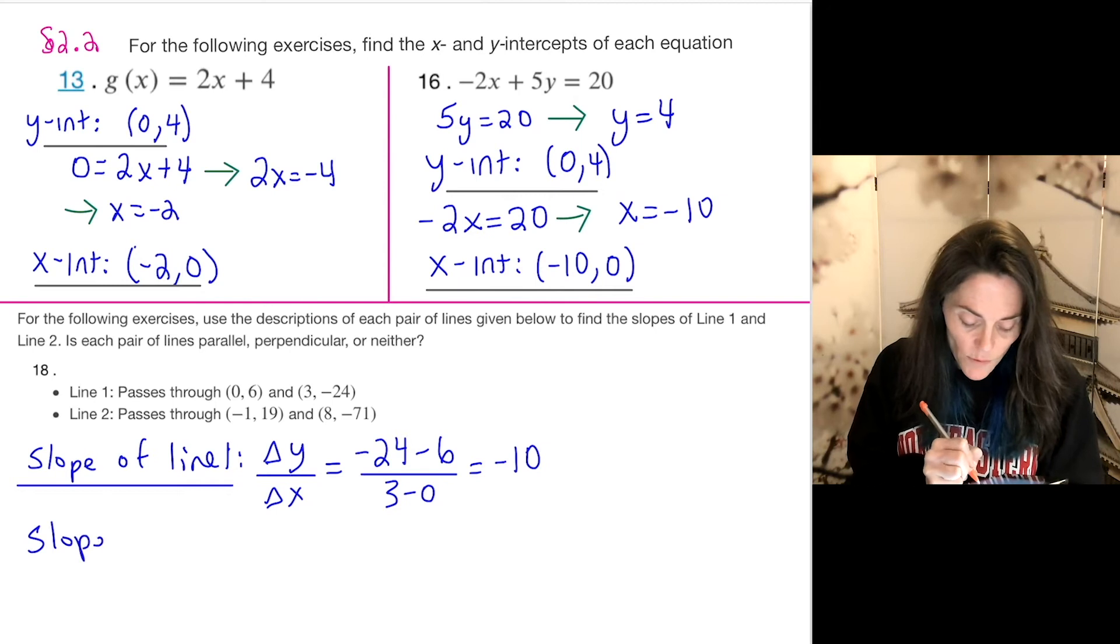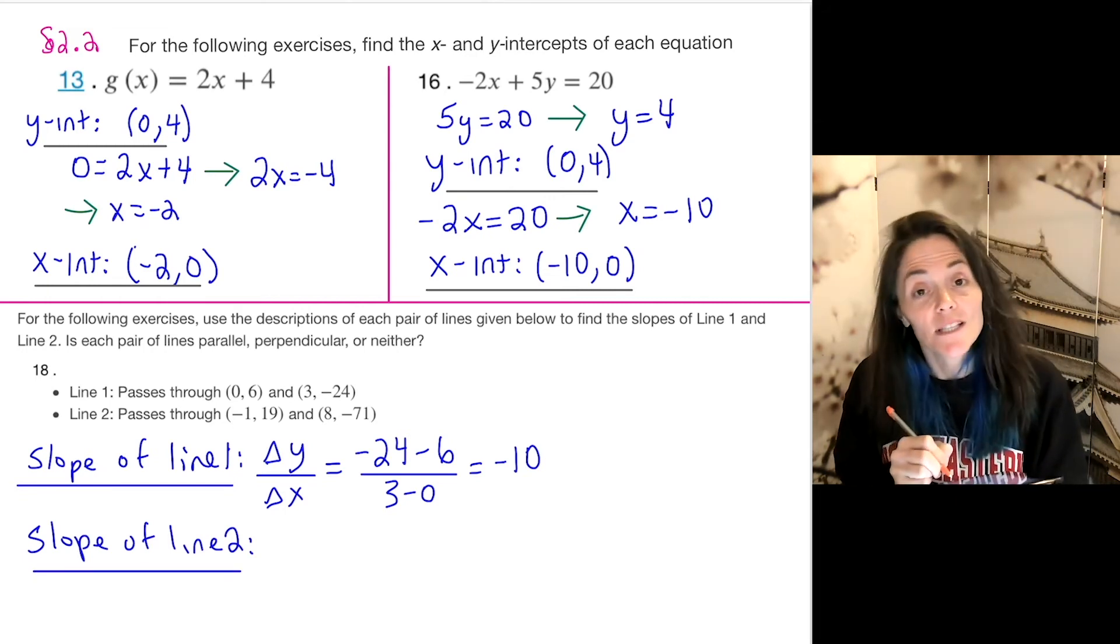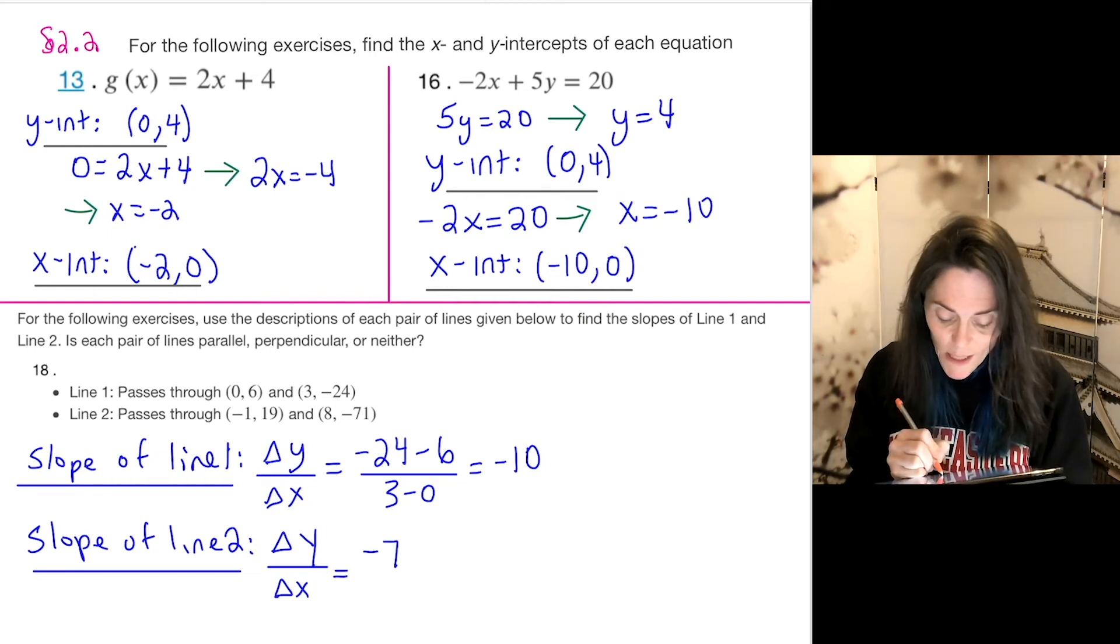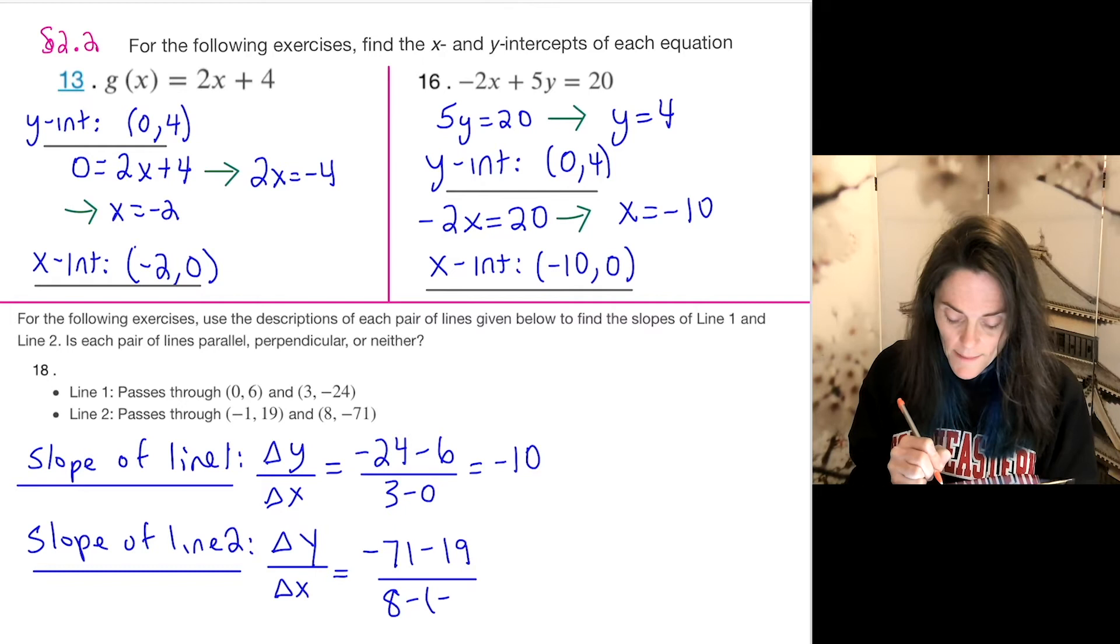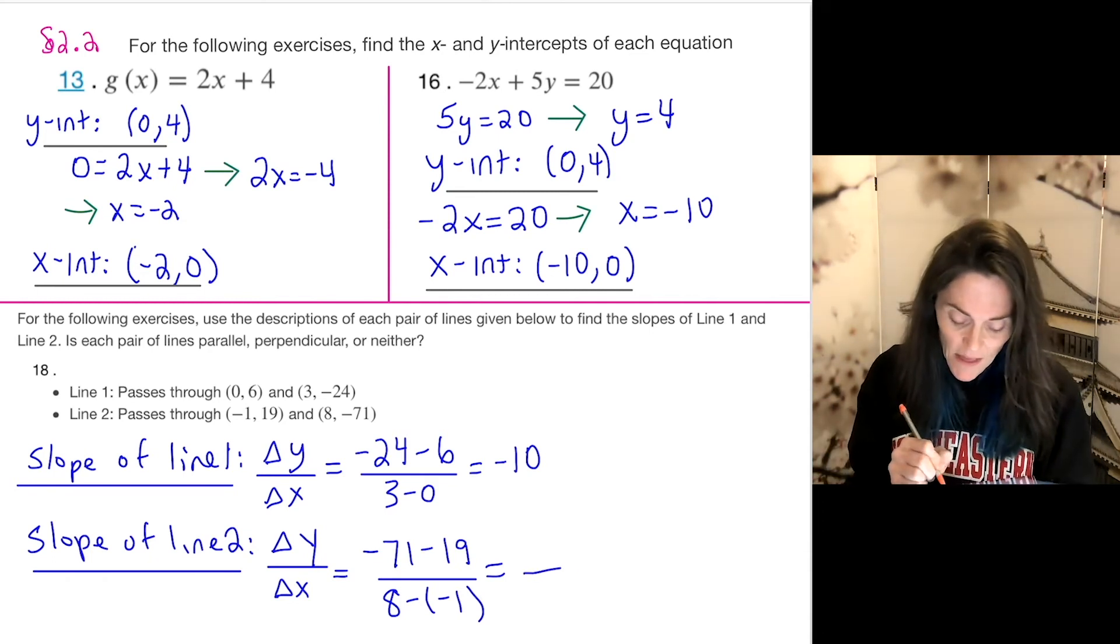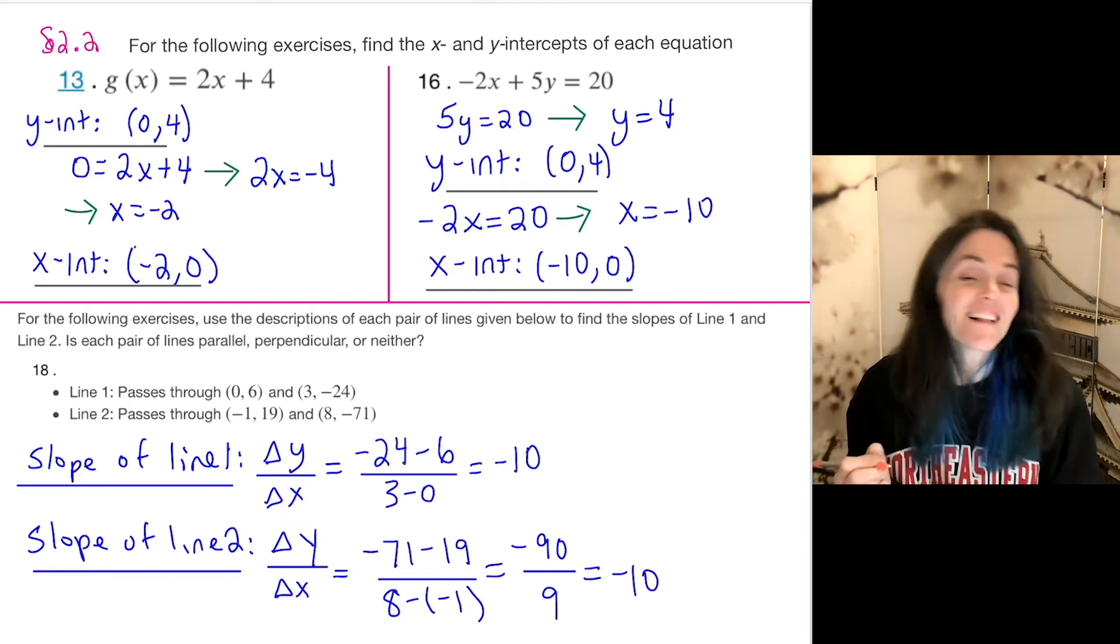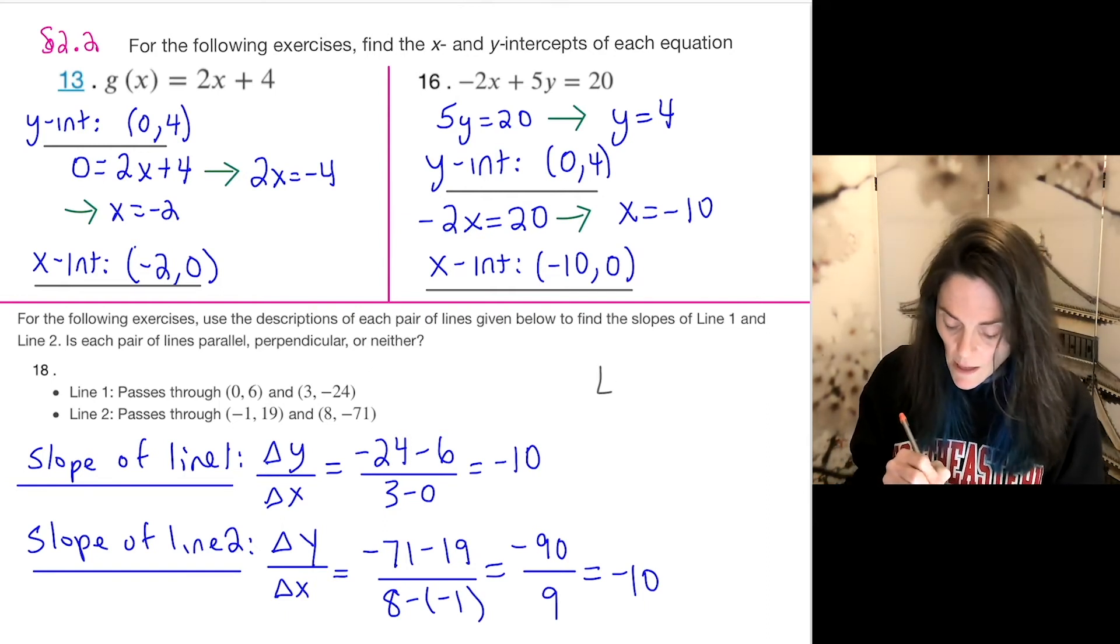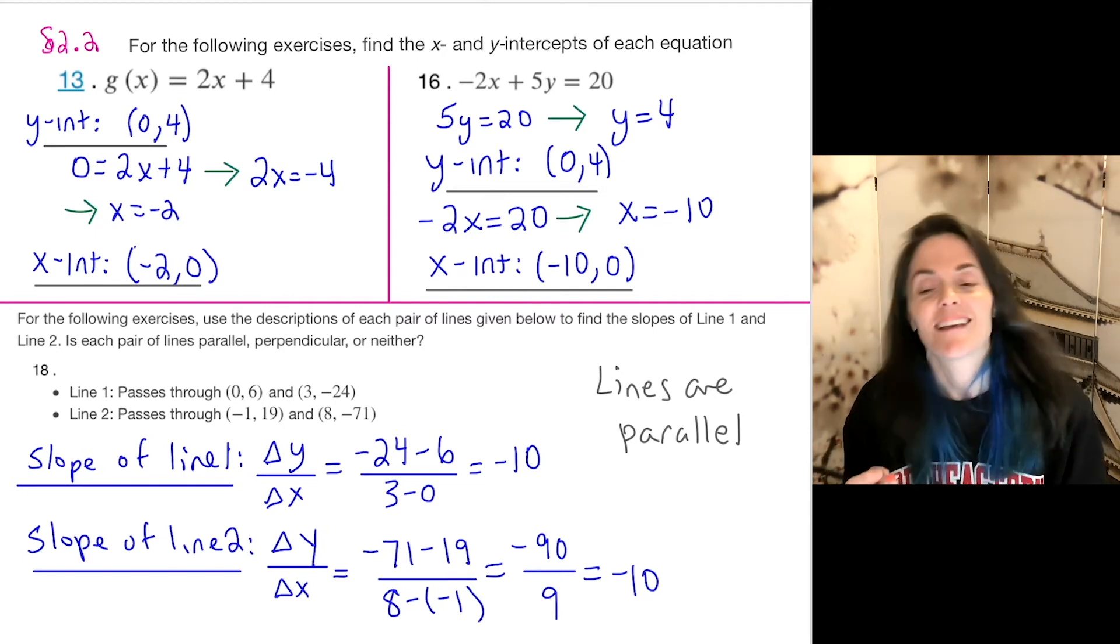Now let's figure out the slope of line two. Well, once again, I have change in y over change in x. We just have two different points. This is negative 71 minus 19 divided by 8 minus minus 1. Well, the denominator, maybe I will take one step here before I write my final answer. The denominator is positive 9. And then the numerator, you notice we have negative 90. So we have negative 90 over 9. This is negative 10. Well, now we can answer the other part of the question. The lines are parallel because they have the same slope. The lines are parallel. Parallel lines have the same slope. This is the other part of this question.